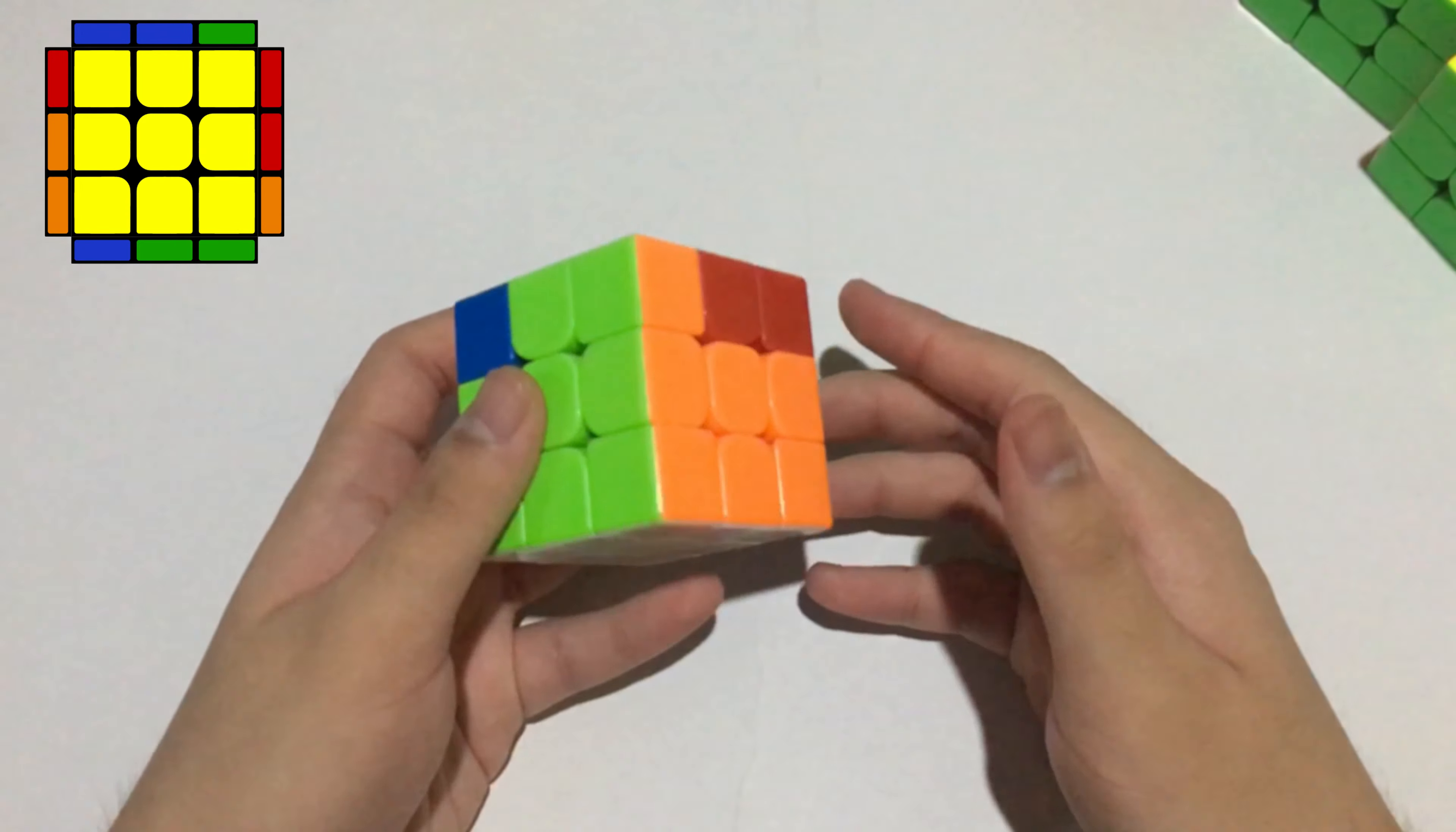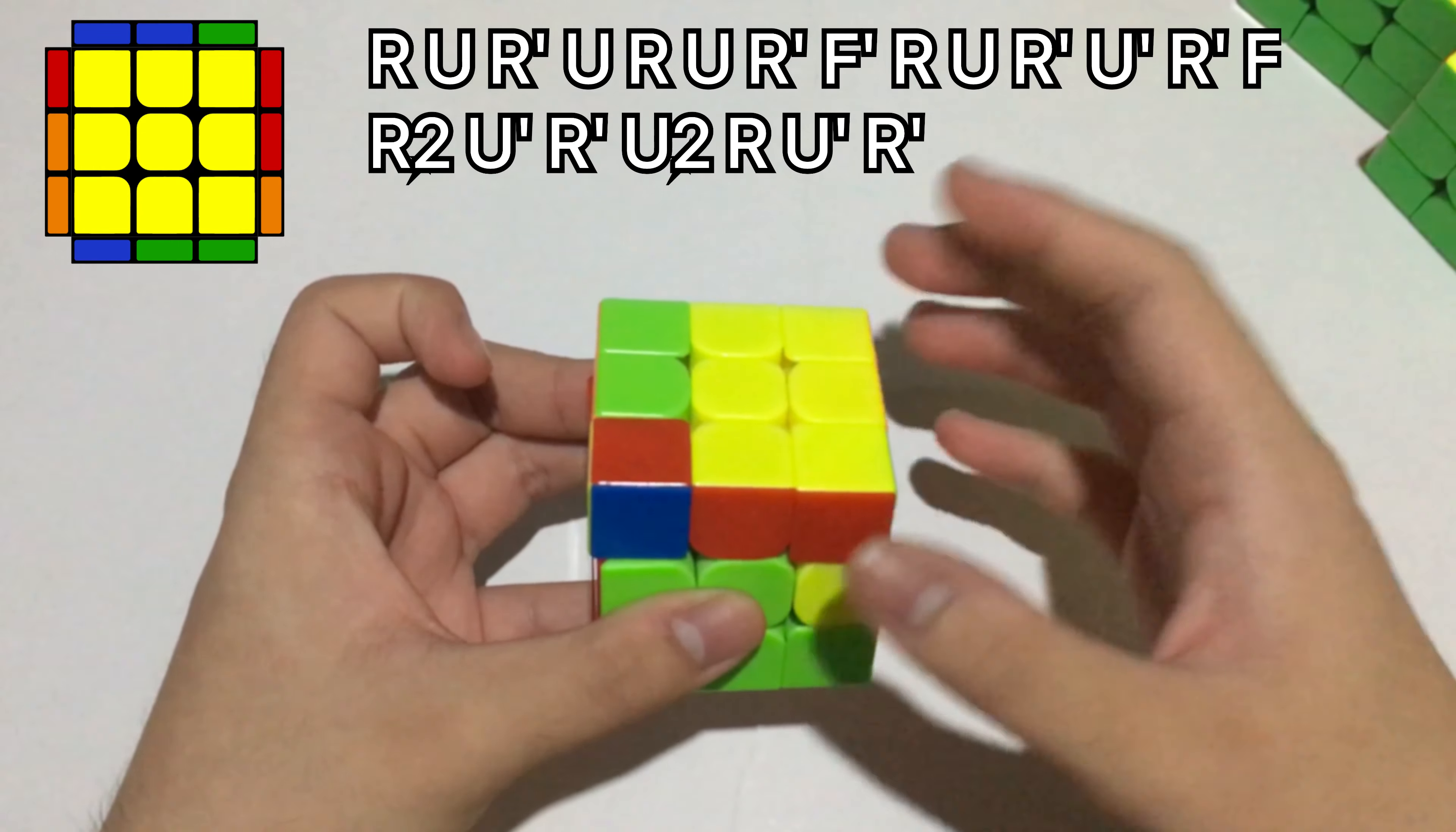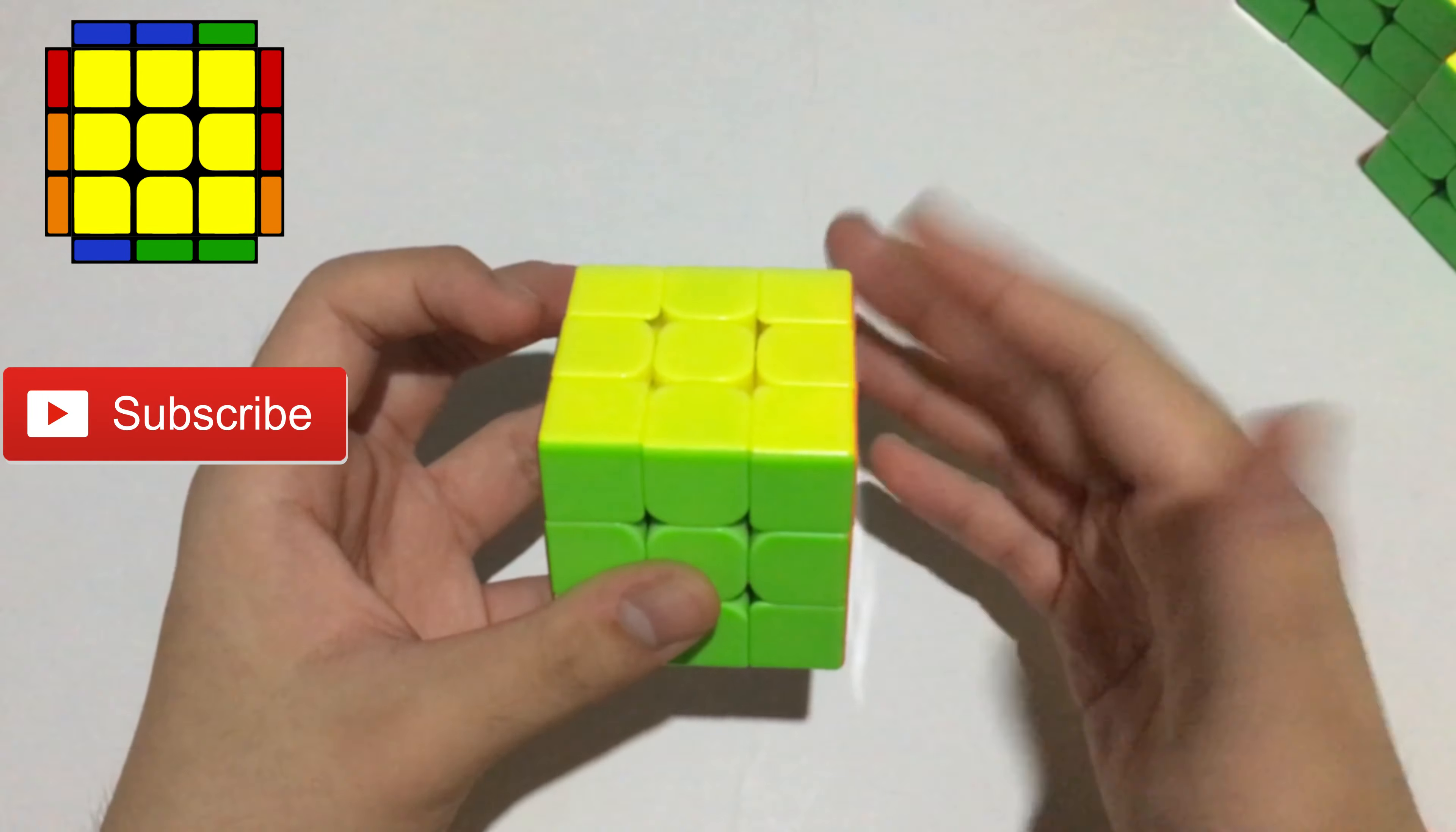And this is the last algorithm. It is just the R U R prime U, then JA, JB perm, then undo the moves.